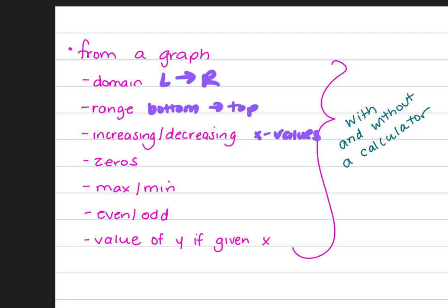Your zeros, you're going to list these. List the x values. Your relative max and min, these are going to be in x, y coordinate point form, okay? There could be more than one. If it goes up and down and up and down, that's two maxes, one min.